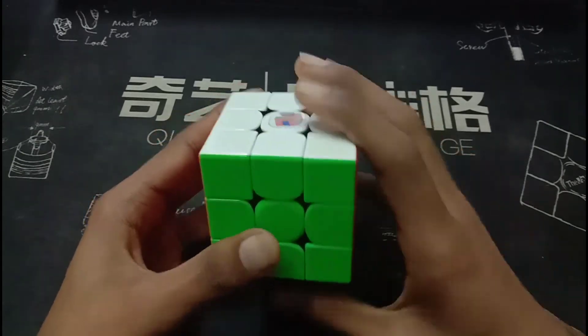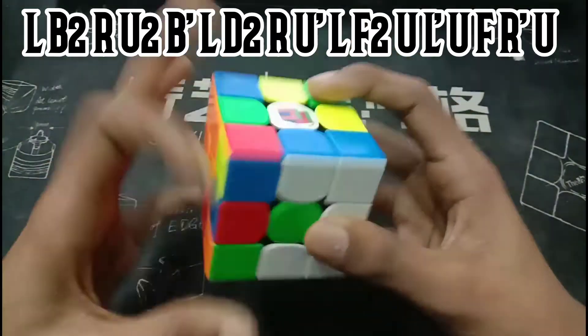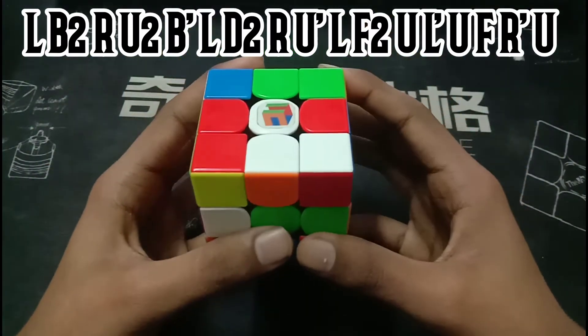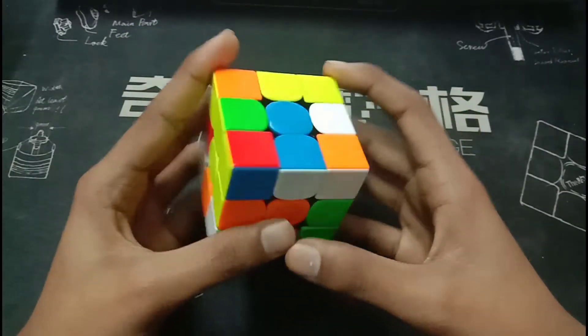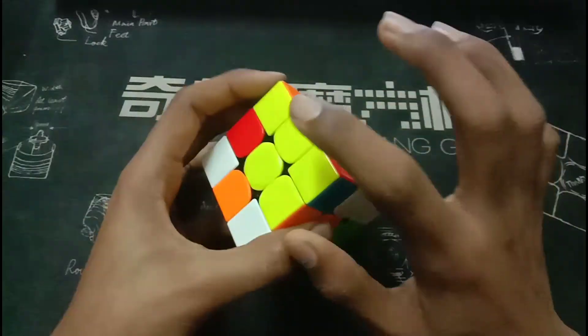Also because the previous one was 5.53 and he needed approximately a 5.4 here to secure the world record average. Let's see what happened in this scenario. The scramble is on screen. In this scramble, he does green cross.